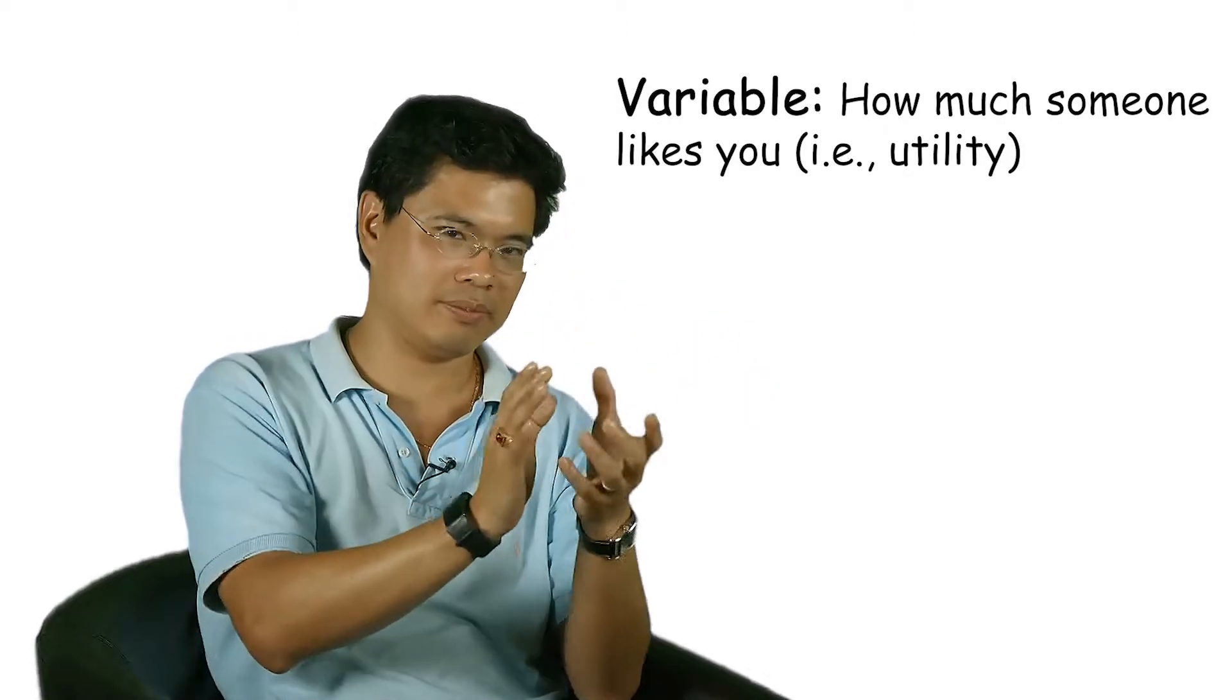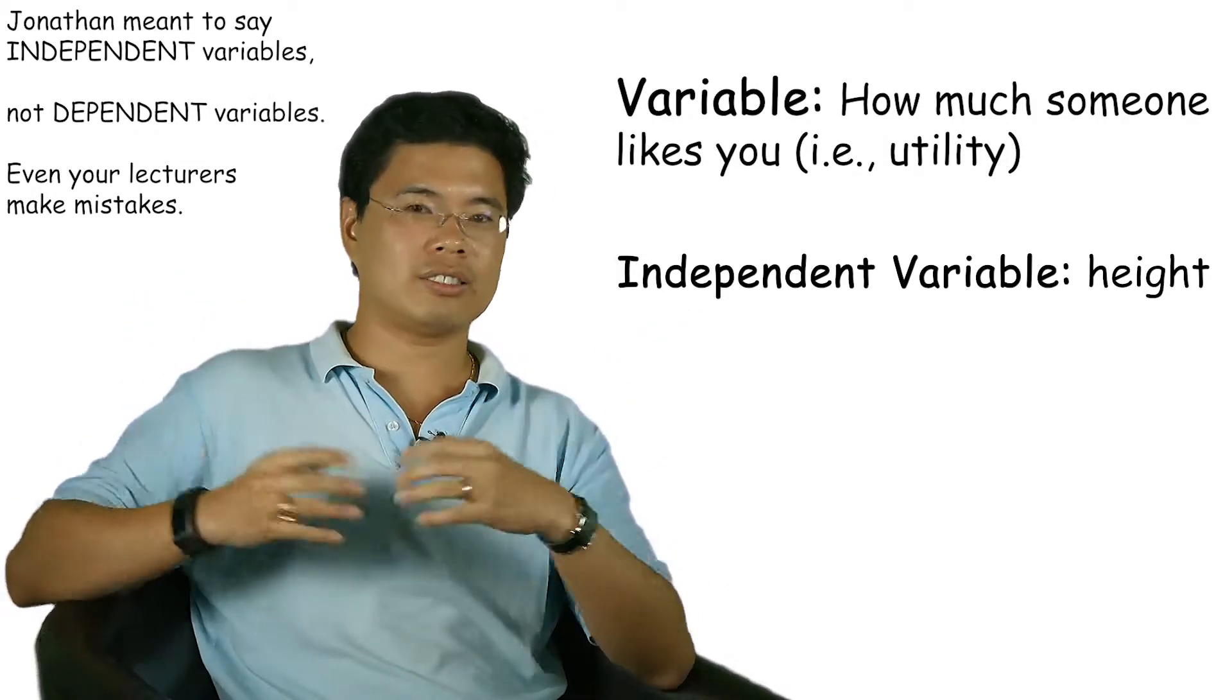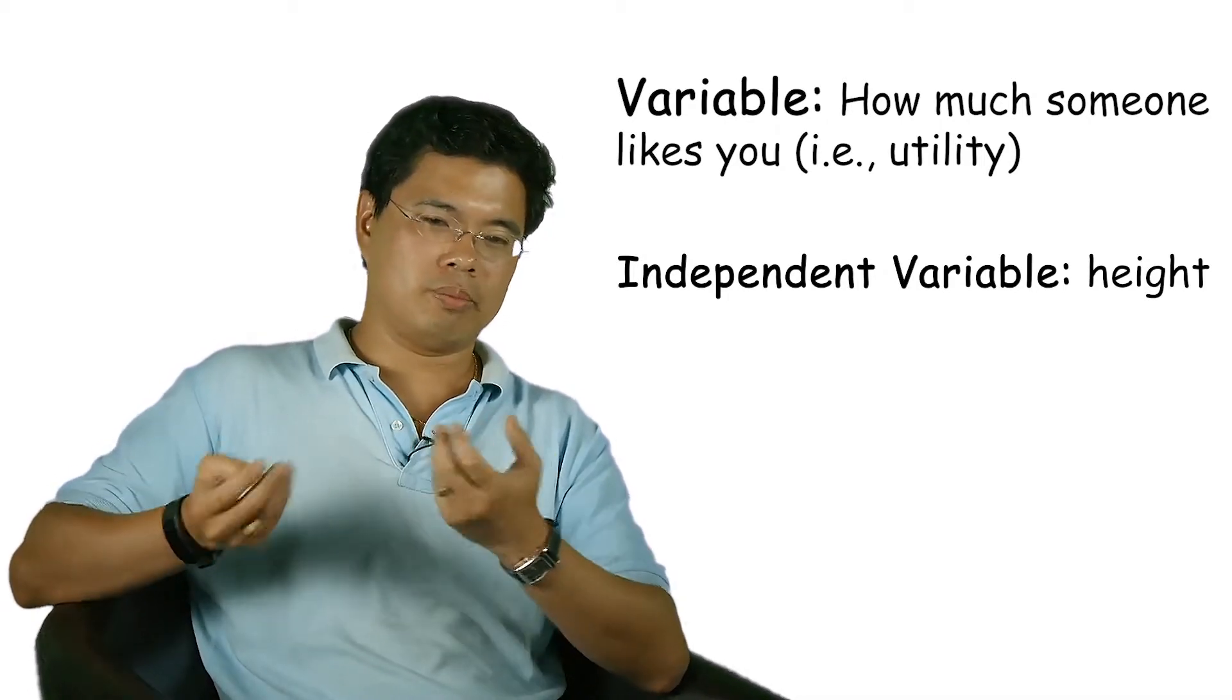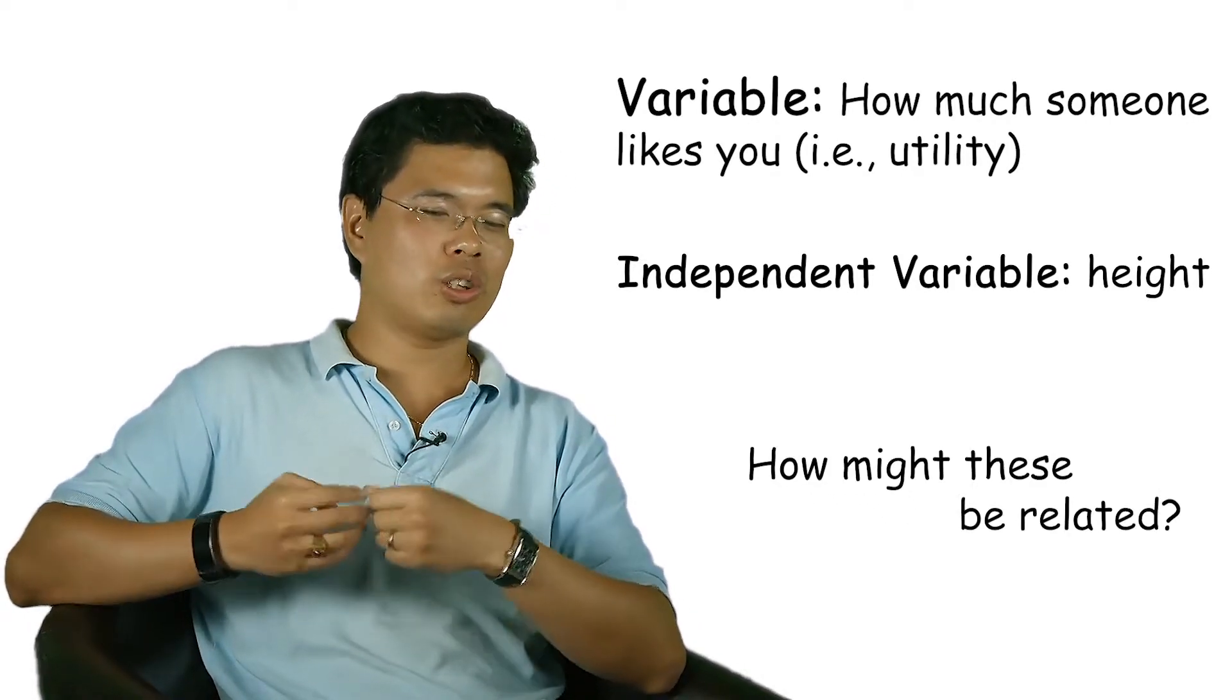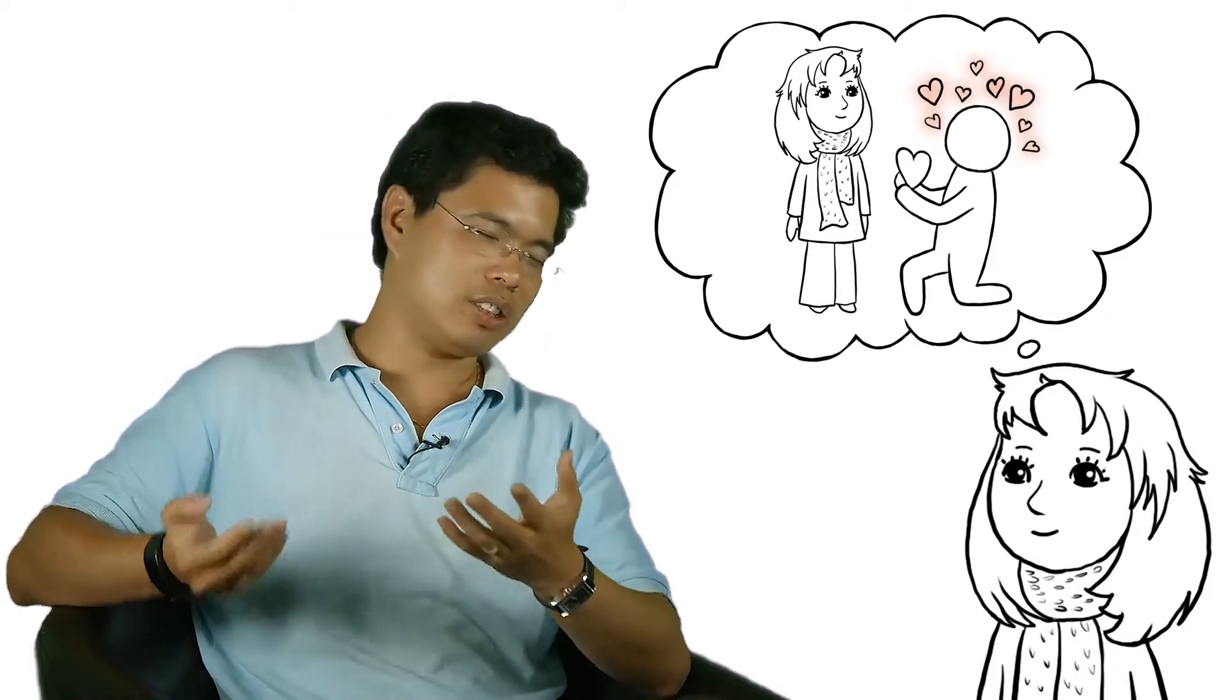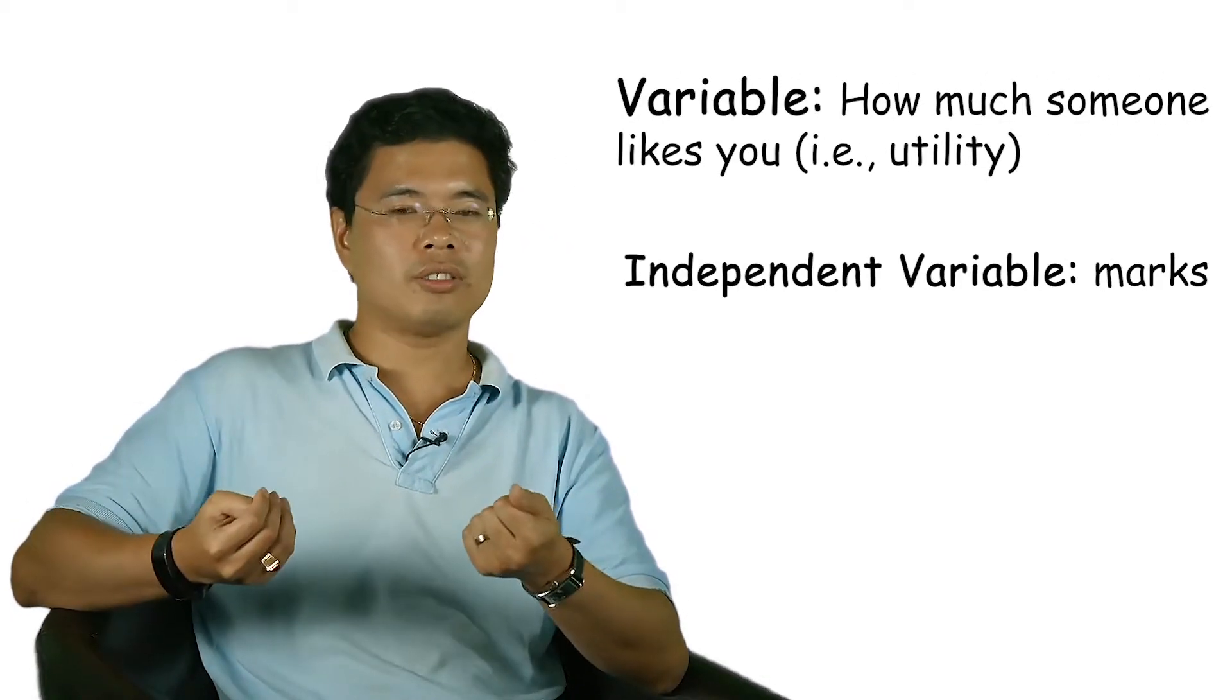On the dependent variable you could have something like height. That person could like a tall person or they could like a short person. The question becomes, if I'm taller does that mean that person will like me more? There's not much you can do with your height, but think about your marks.